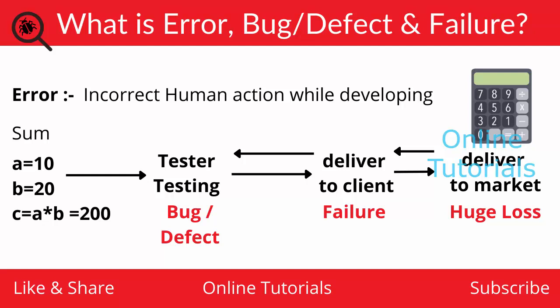I'm declaring variables a and b. A equals 10, b equals 20, and I want to write a program for sum — a plus b. But suppose the developer has given multiplication instead of plus. The output will be 200, but we actually need the sum. Mistakes like these are called errors.